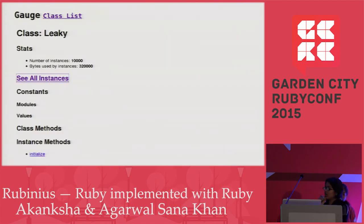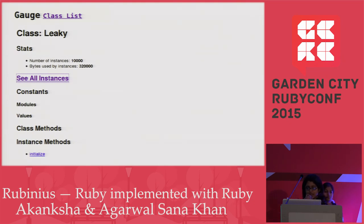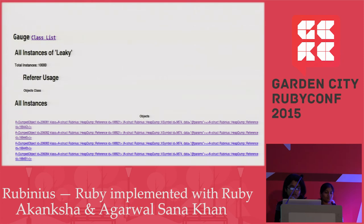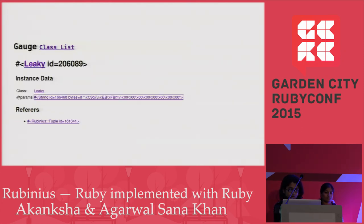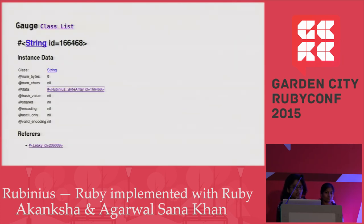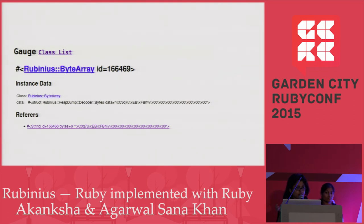Gauze is a web app which allows us to see what is inside a heap dump. In our case we have a leaky class — we can go and see all instances of the leaky class. It lists all instances of a class. If you open one, you see a dump object. Opening that gives you details like what is inside the instance variable of that class and what objects are referring to that object. If you open the params instance variable, you can see that inside the data field there is a byte array — that's essentially what is being stored inside the data field.